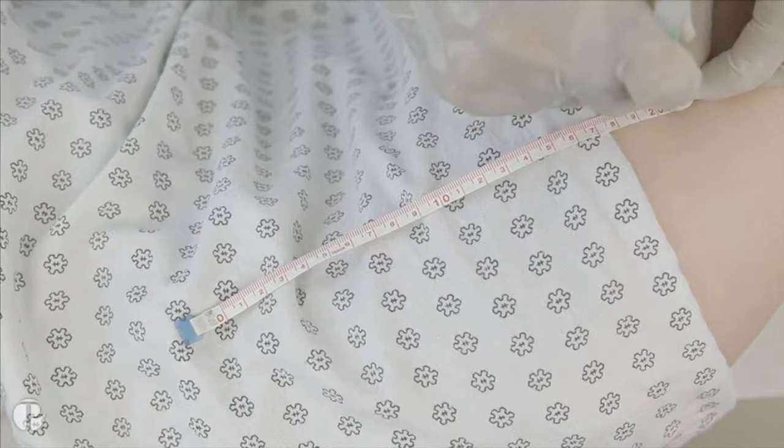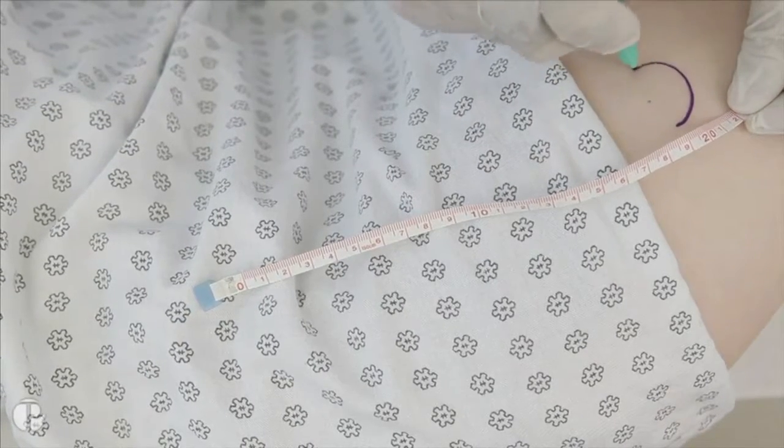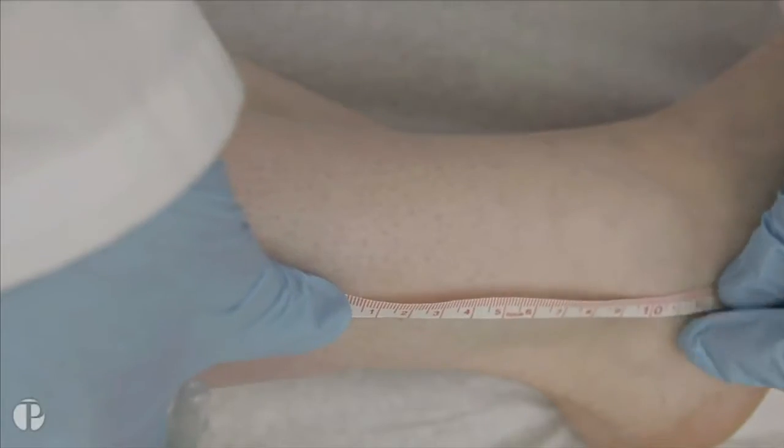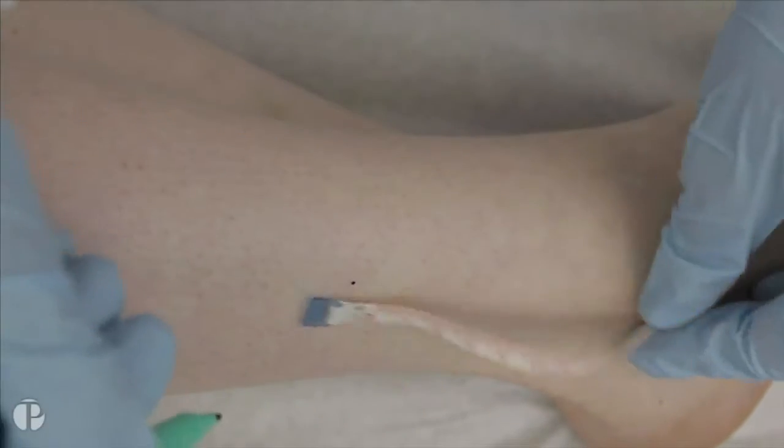The thigh site is located 20 cm below the iliac spine at the level of the pubis. The distal leg or calf site is located 10 cm above the lateral malleolus.